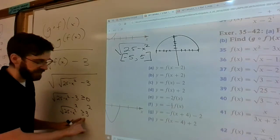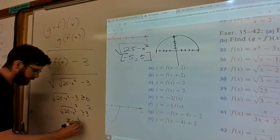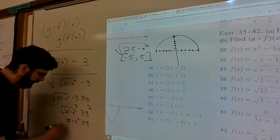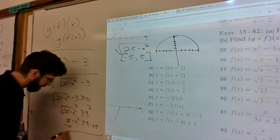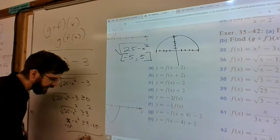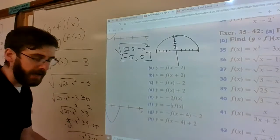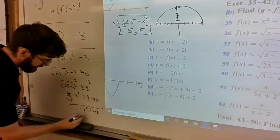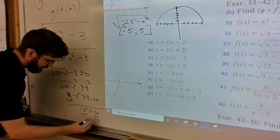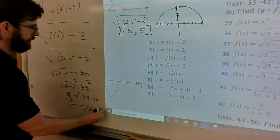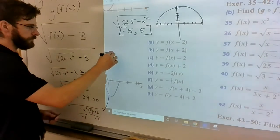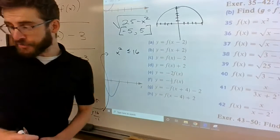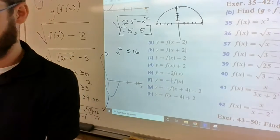At this point you can subtract 25 from both sides and you get -16. Divide by -1, that flips this symbol.